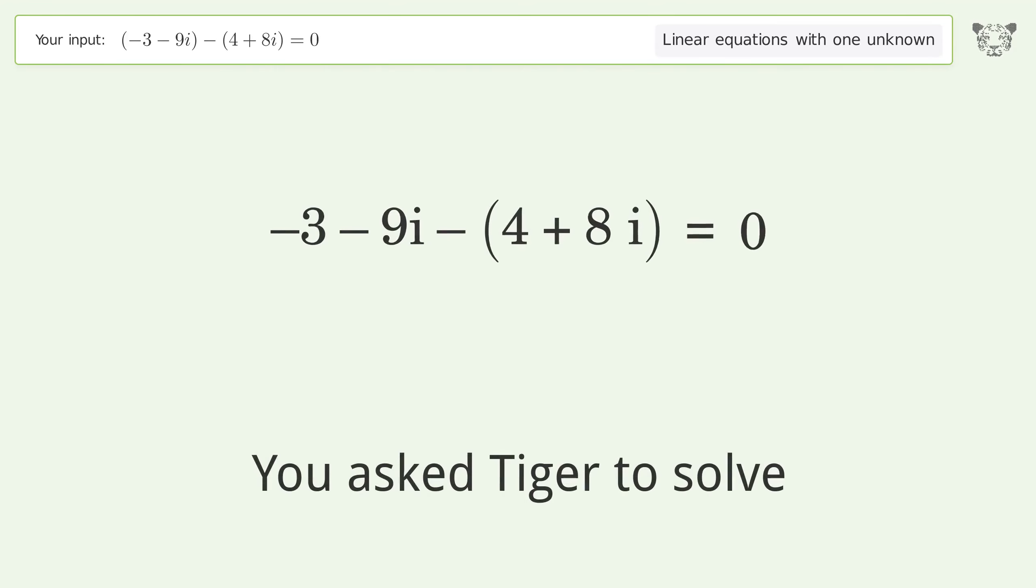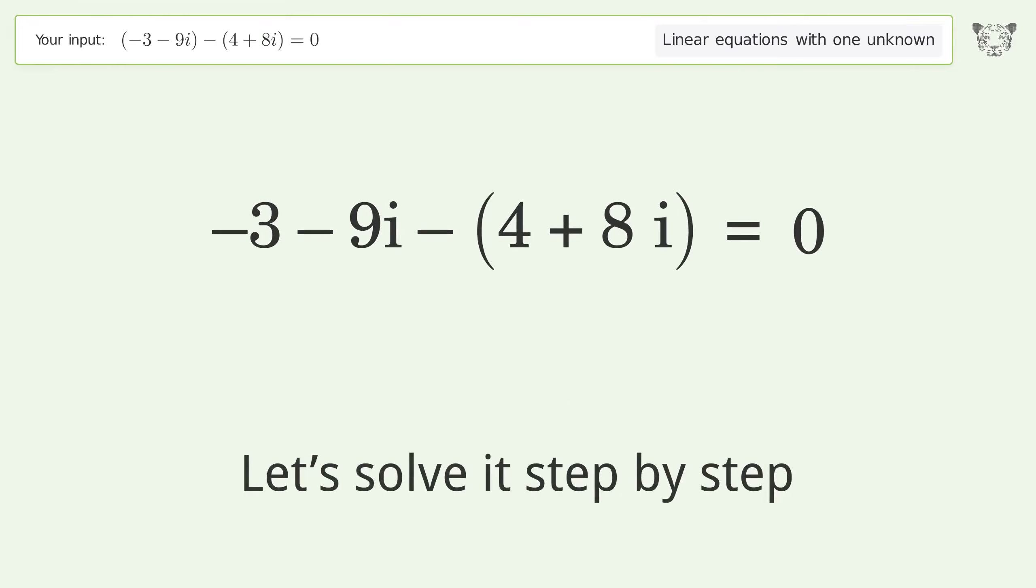You asked Tiger to solve this linear equation with one unknown. The final result is i equals negative 7 over 17. Let's solve it step by step.